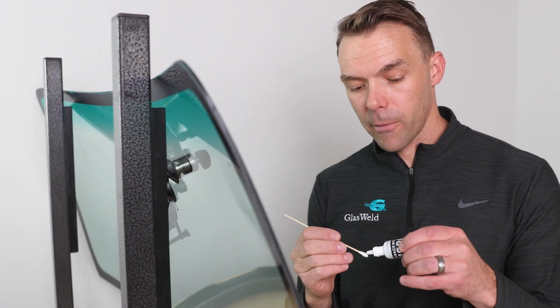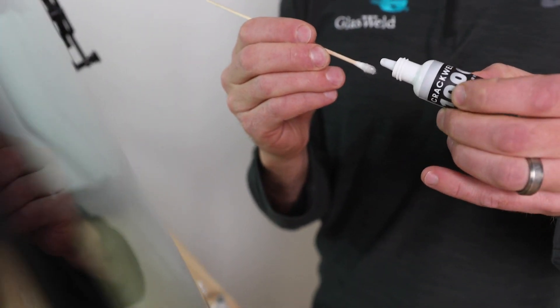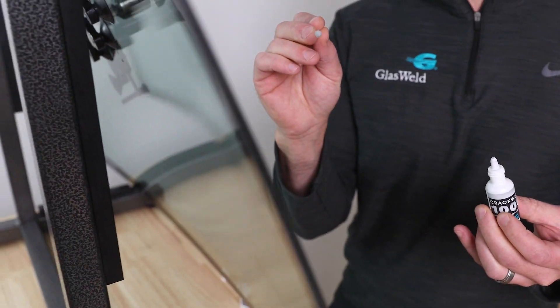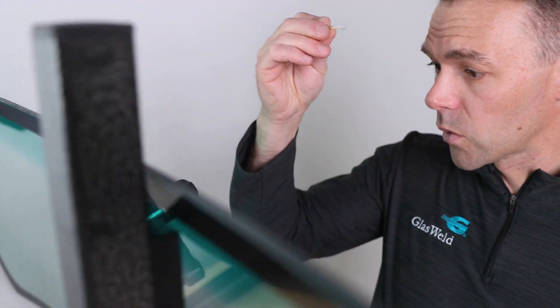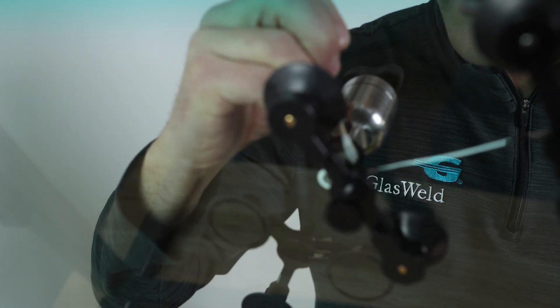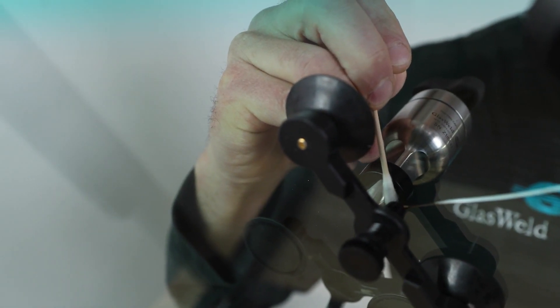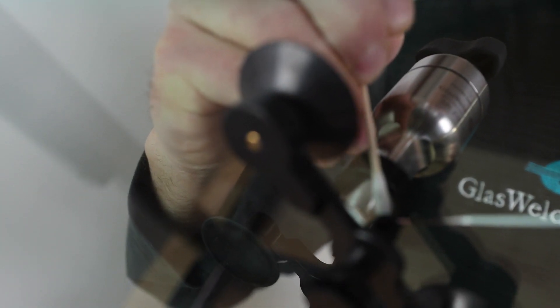So we're just going to load up our q-tip with a couple drops of resin. Kind of let it saturate there. We don't want a lot on the surface and we can always add more, so maybe about two to three drops worth. You can see that slight gray tint to the resin which will help to absorb the light. And then we're just going to come to the crack right here, and if you notice, we're going to start right about where the resin is flowing. And we're just lightly touching the crack.